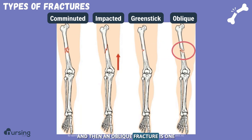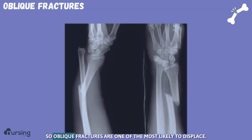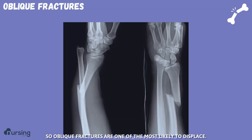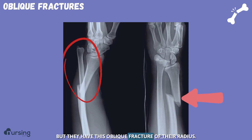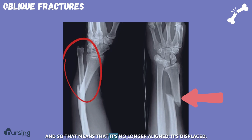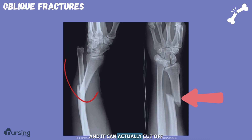An oblique fracture is one that is diagonal or asymmetrical, and oblique fractures are one of the most likely to displace. You can see how not only has this person's ulna completely dislocated, but they have this oblique fracture of their radius. That means it's no longer aligned — it's displaced — and it can actually cut off blood vessels or nerves in this area.